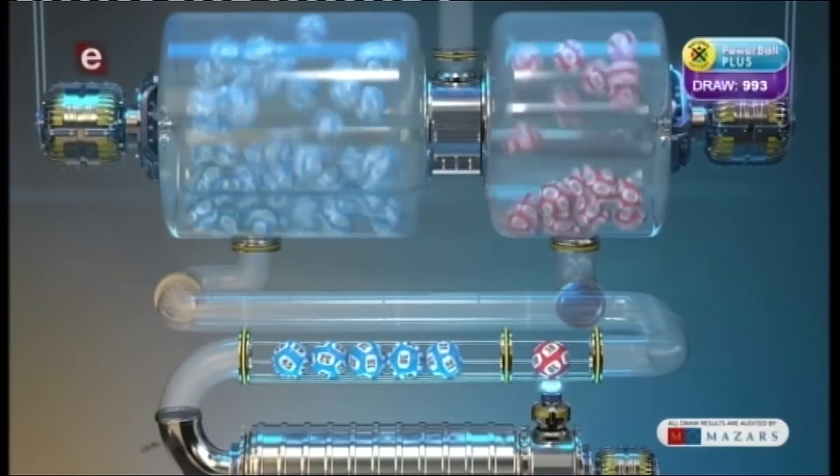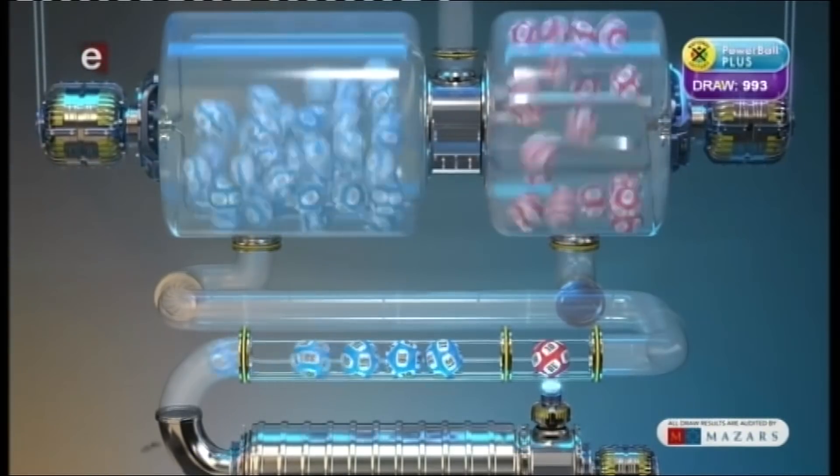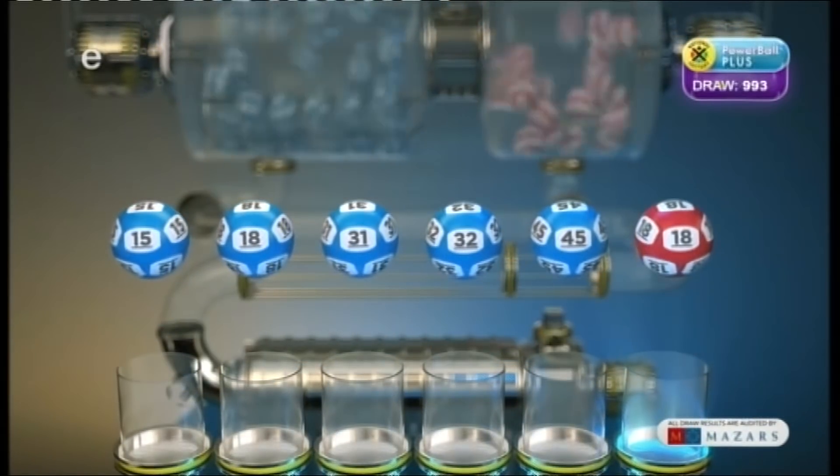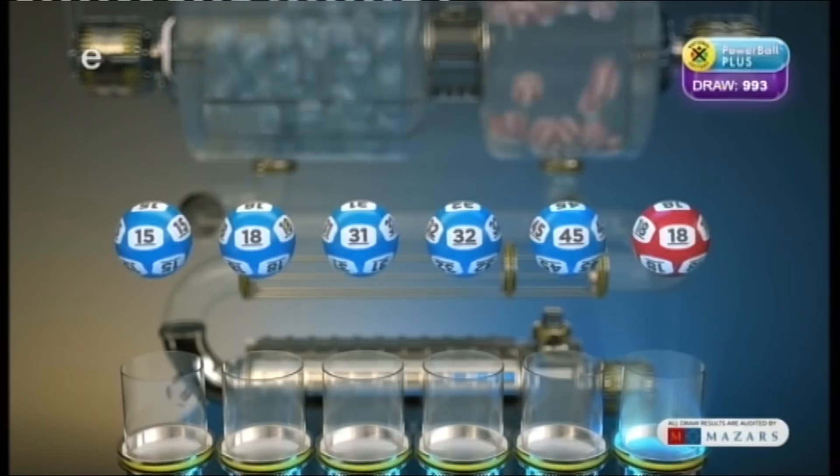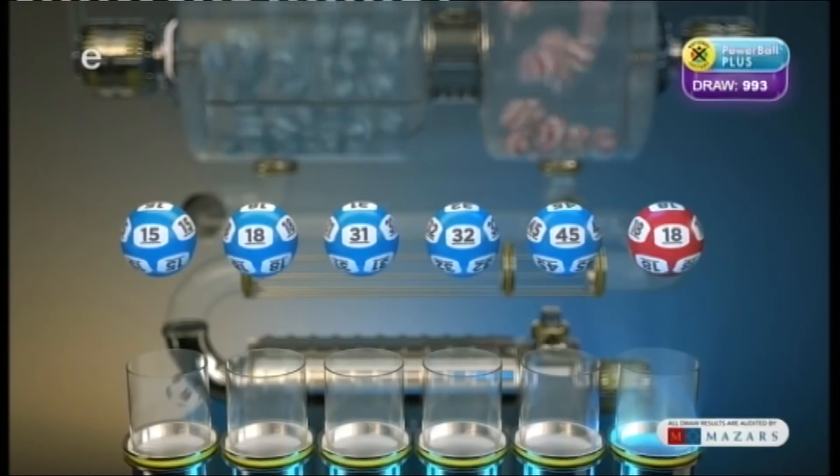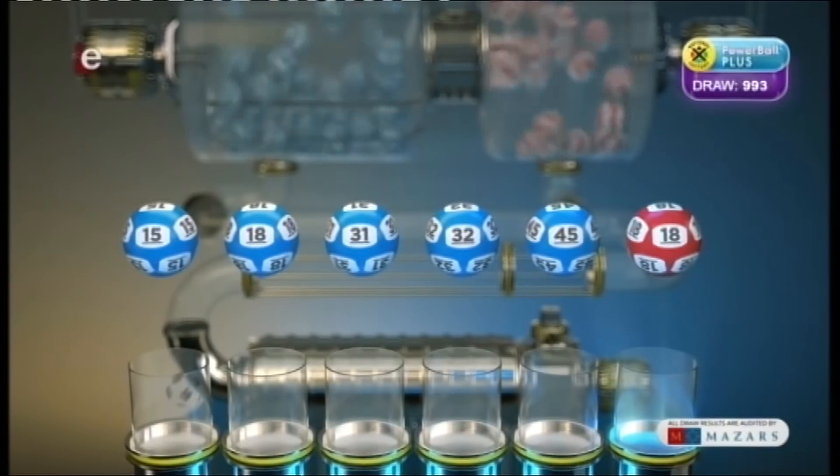And the Powerball is 18. Let's recap these numbers in numerical order: 15, 18, 31, 32, 45, and the Powerball is 18.